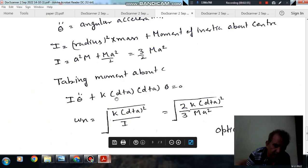Now the coefficient of stiffness is K(A+D)² and coefficient of inertia is I, and the value of I is 3/2·mA². Putting this value we can get the natural frequency as root of 2K(A+D)² divided by 3mA².